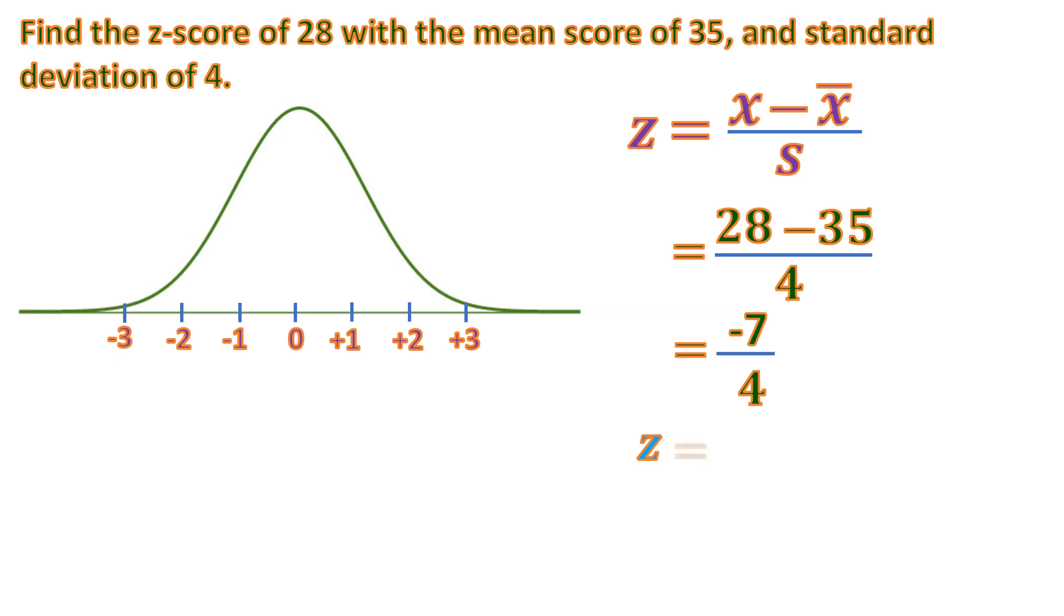So z is equal to negative 1.75. So where is negative 1.75 in our normal curve? It's here. So that is where the z-score of 28 is located.